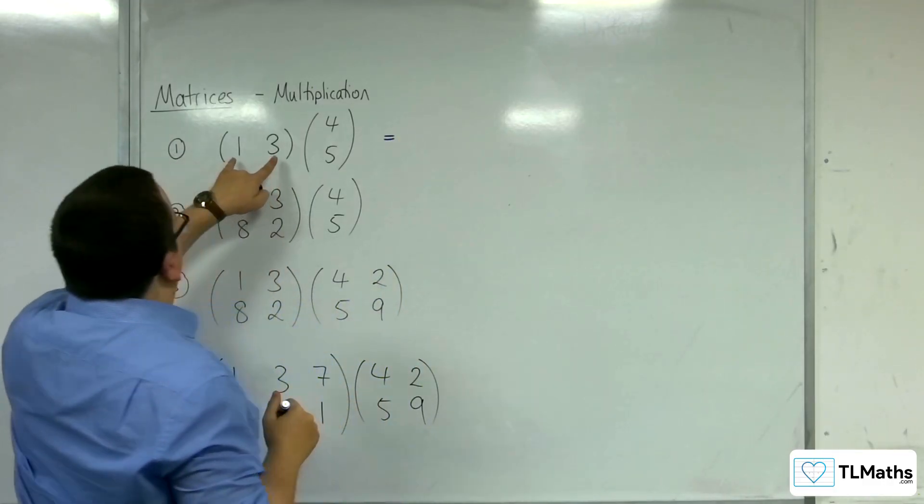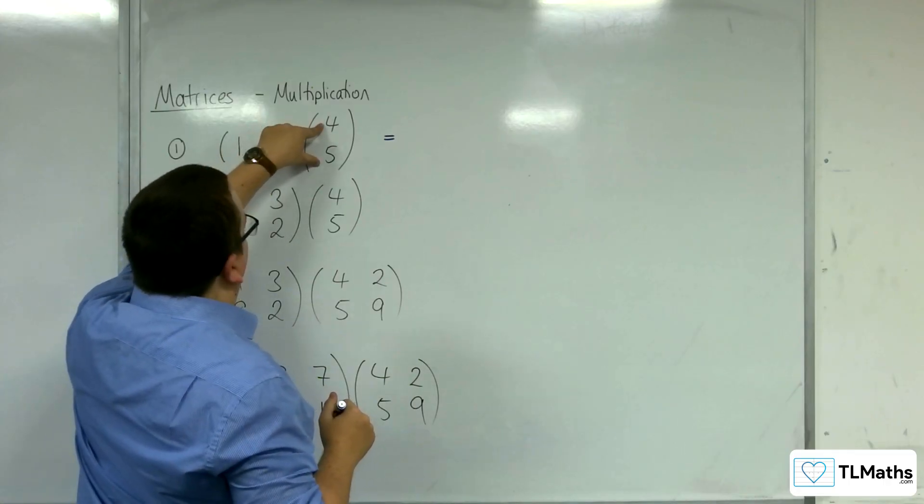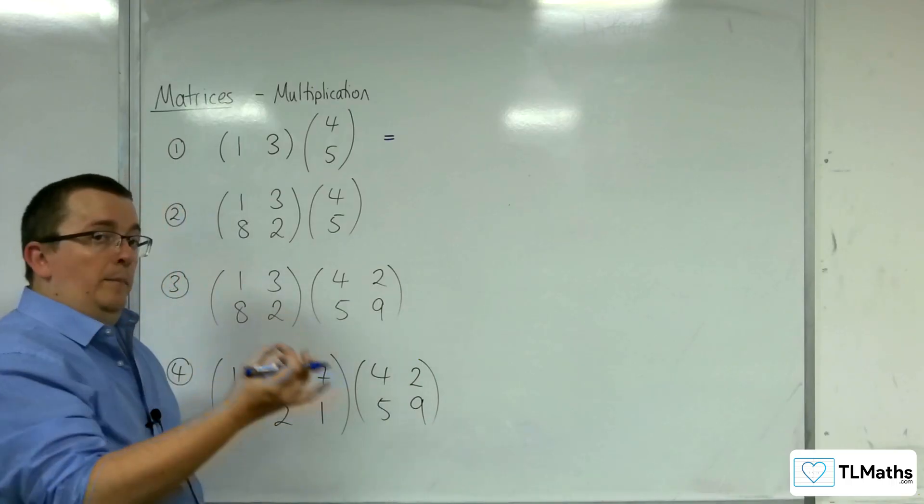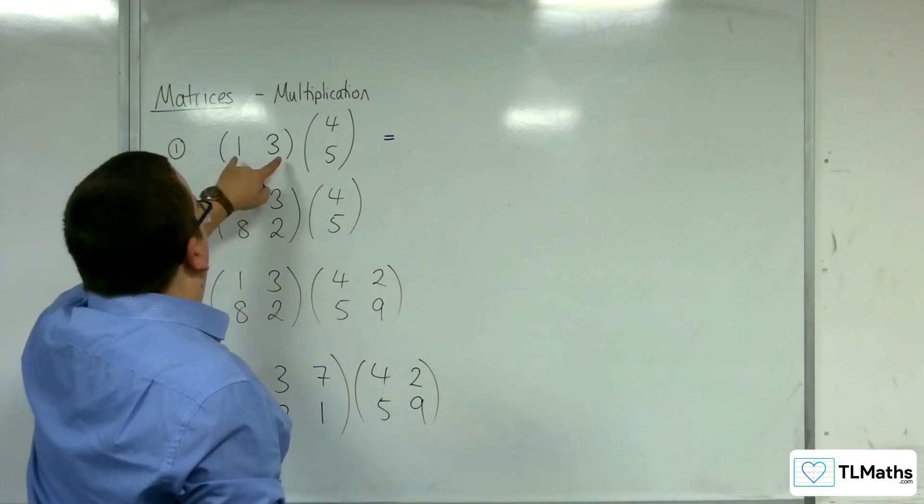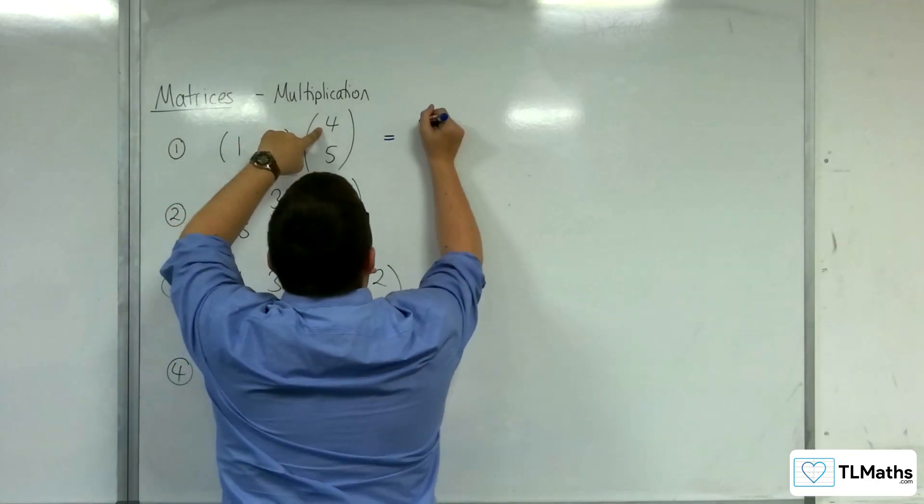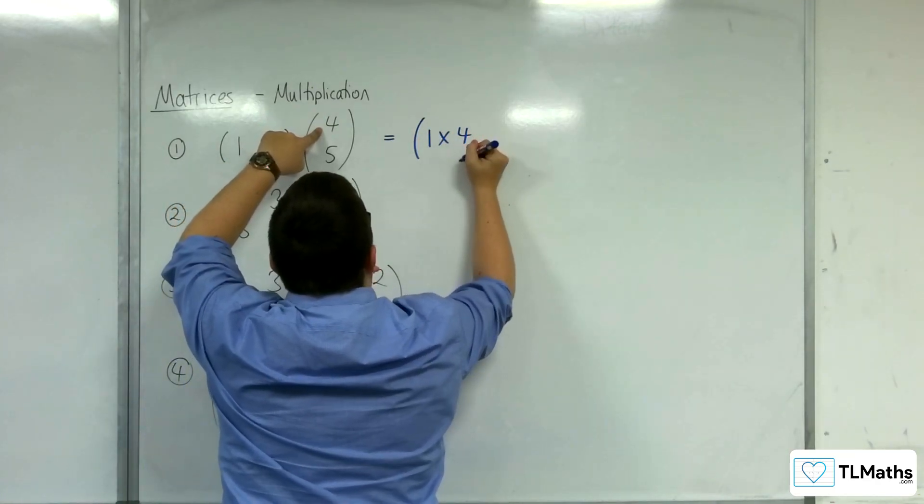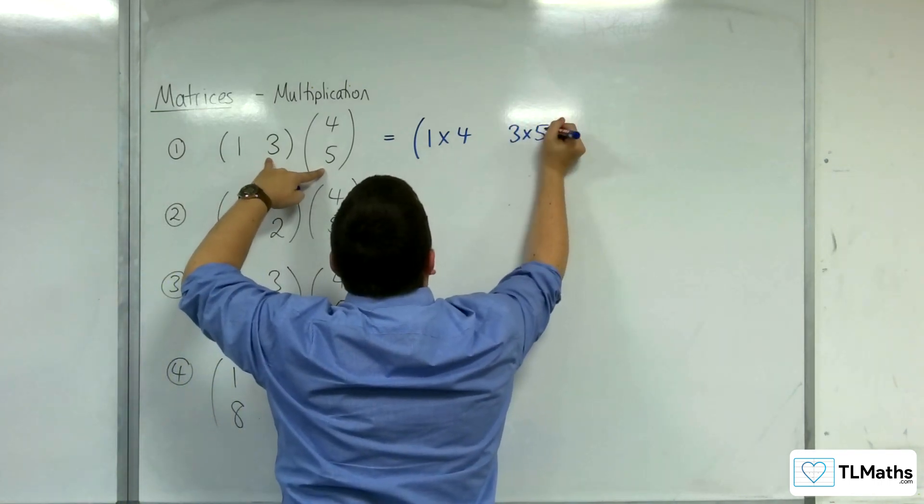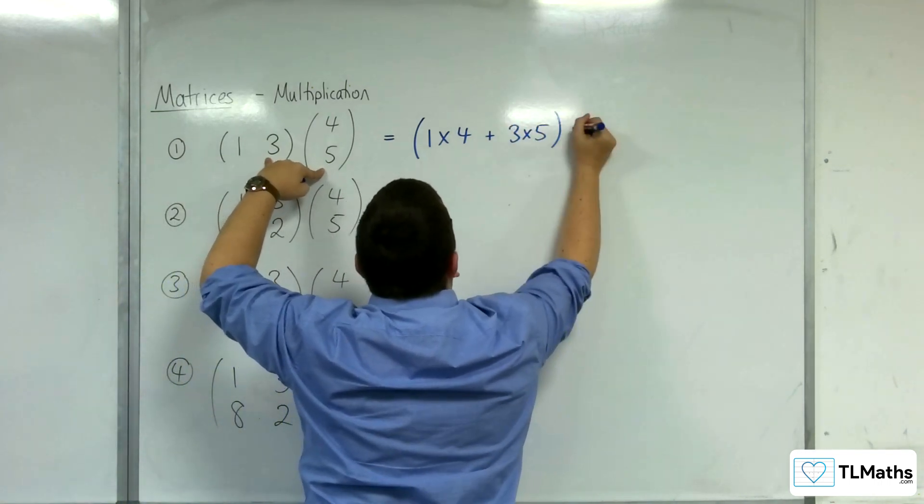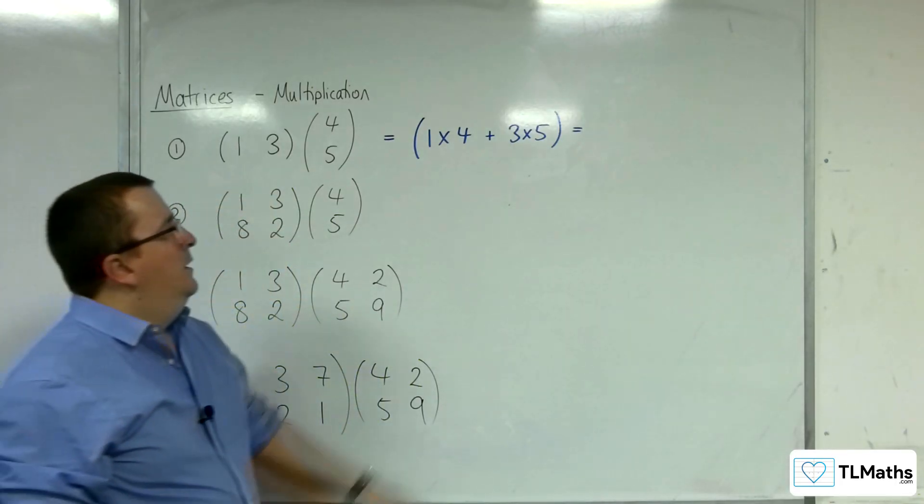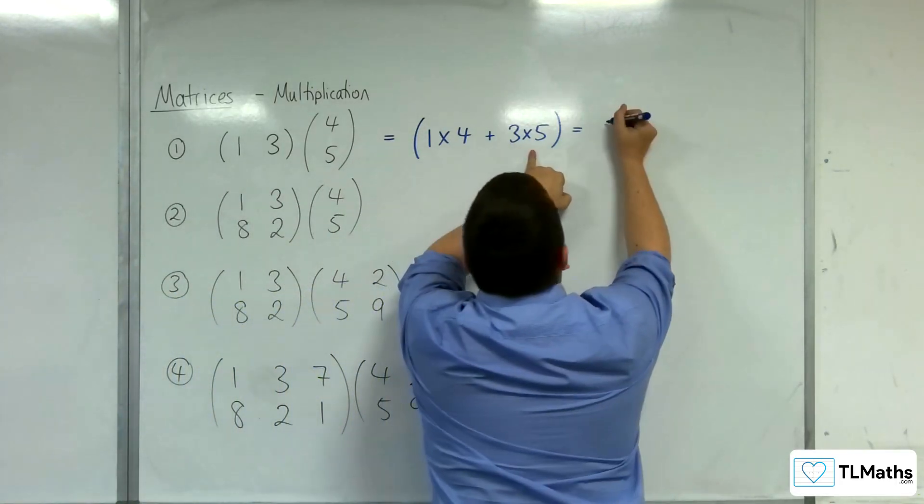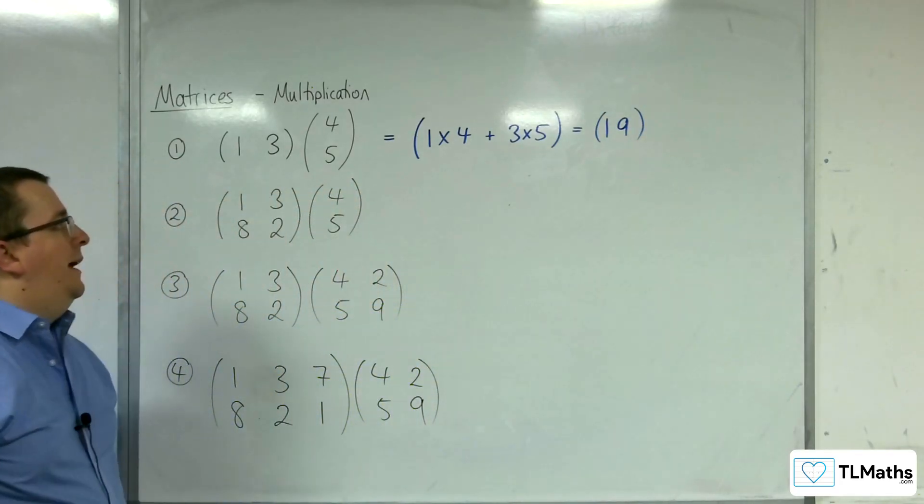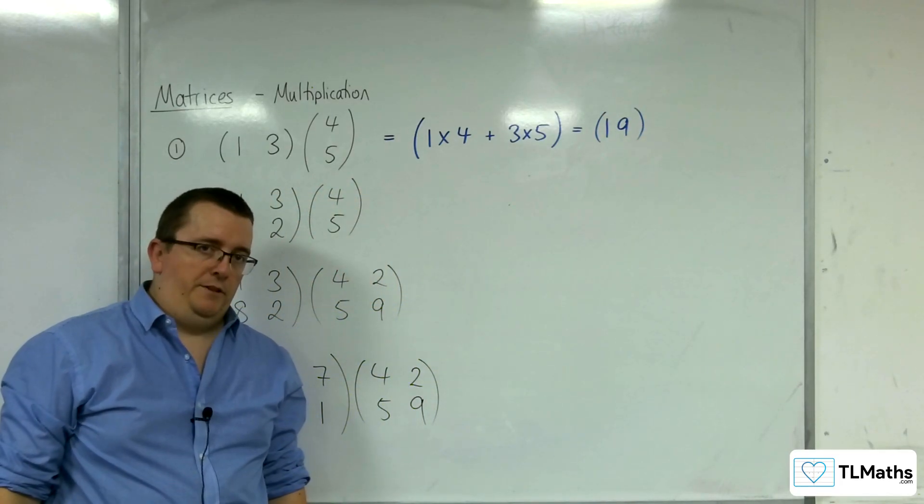What we're going to do is 1, 3 times 4, 5. And what that does in that one step gives you a single element. So, you do 1 times 4, and then you do 3 times 5, and those two results you add together. So, we get 4 plus 15, so 19. The result of this is a single element.